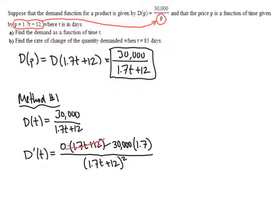So 0 times anything is 0. And so what we end up with is negative 30,000 times 1.7 divided by 1.7t plus 12 quantity squared.